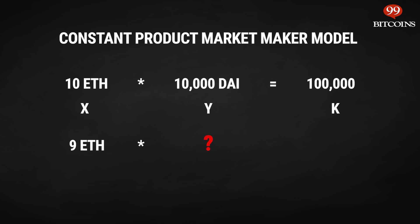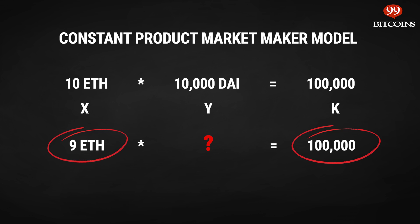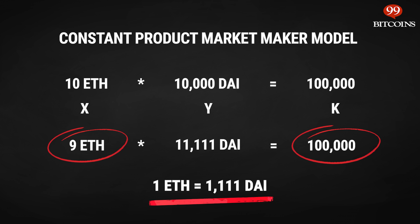Now, if I were to buy one Ether, this would reduce the number of Ether in the pool to nine. The way to calculate the cost is to take our constant of 100,000 and divide it by the new number of Ether, which would be nine. This gives us the new number of DAI required in our pool, which would be 11,111 — meaning we would need to deposit around 1,111 DAI to buy one Ether. As you can see, the price is determined by how much of a certain token you want to buy, not by how much someone else wants to get for it.